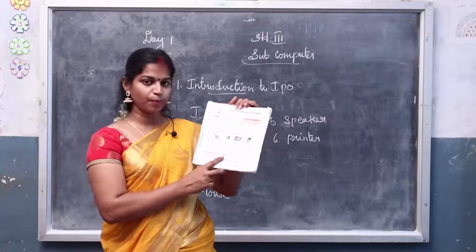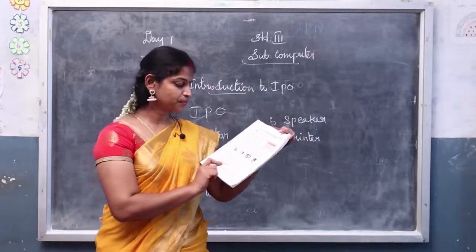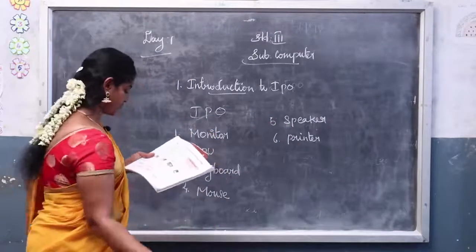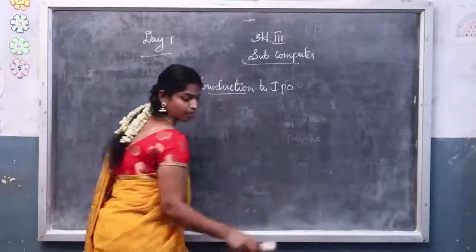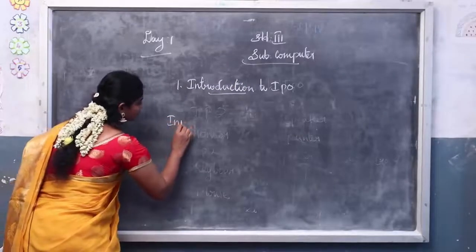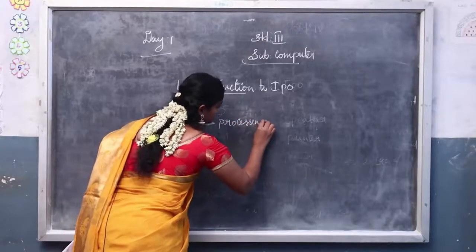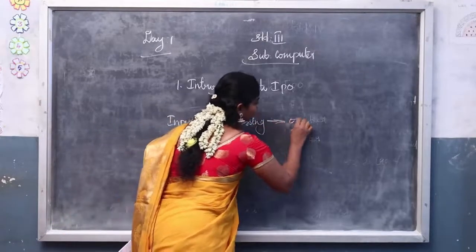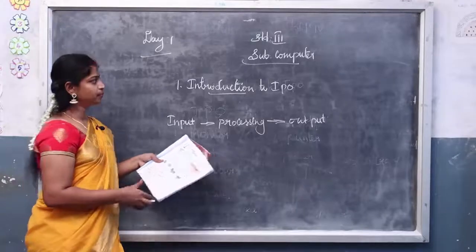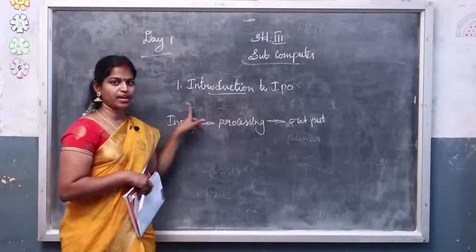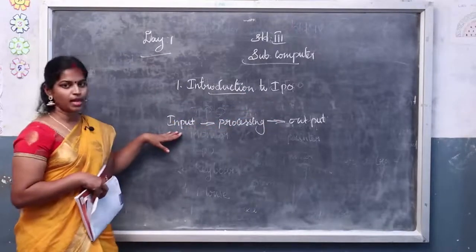Next, working of a computer. A computer works in three steps: input, processing, and output. This is known as the IPO cycle. I stands for input, P stands for processing, O stands for output.